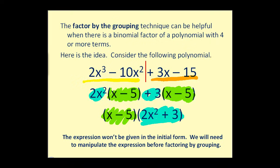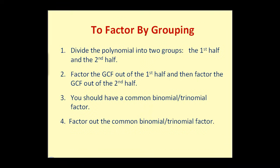Let's formalize these rules. To factor by grouping: step one, divide the polynomial into two groups — the first half and the second half. Step two, factor the GCF out of the first half and then factor the GCF out of the second half. Step three, notice a common binomial or trinomial factor depending on how many terms you started with. Step four, factor out the common binomial or trinomial factor.